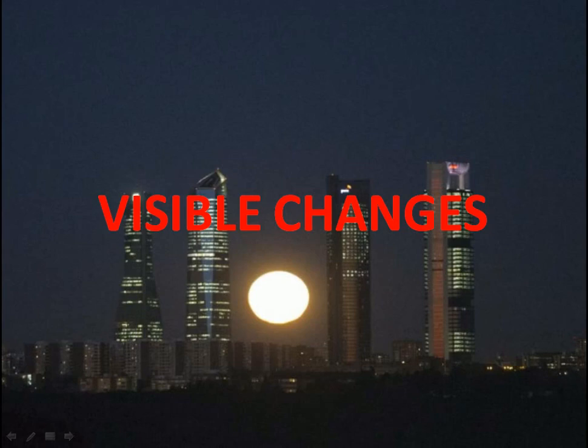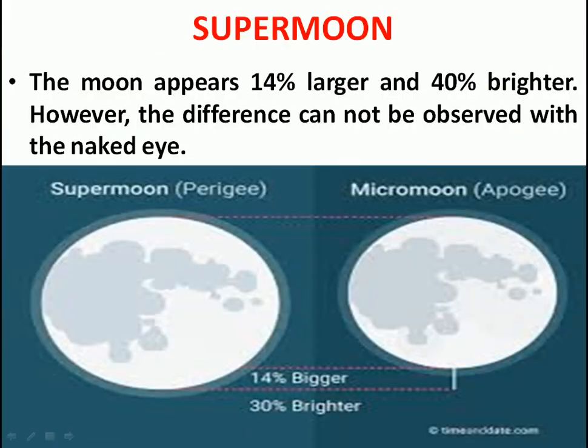Can we see any visible changes with the naked eye? The answer is no. If you want to see visible changes, it is not possible with the naked eye alone. However, you can use cameras with telephoto lenses, binoculars, or telescopes to get enhanced views of the lunar surface. The moon appears approximately 40% larger and 30 to 40% brighter, but the difference cannot be observed with the naked eye.